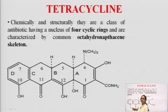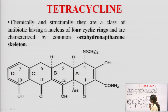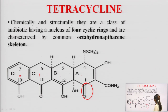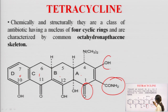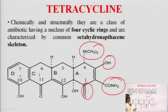In the tetracycline structure, four rings are present, starting from the right side: ring A, ring B, ring C, and ring D. At various positions there is a ketonic group, a CONH₂ group, an OH group, a dimethylamino group (N(CH₃)₂), and in alternating positions: double bond O, ketone, and hydroxyl groups.